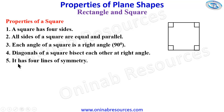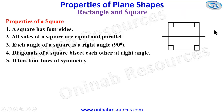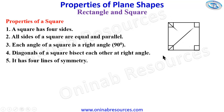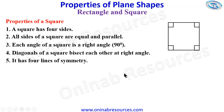The next property is it has four lines of symmetry. The first line of symmetry is vertical, then the horizontal line is the second line of symmetry. Also the diagonals are lines of symmetry — so that makes four lines of symmetry for a square. That's all for properties of a square.